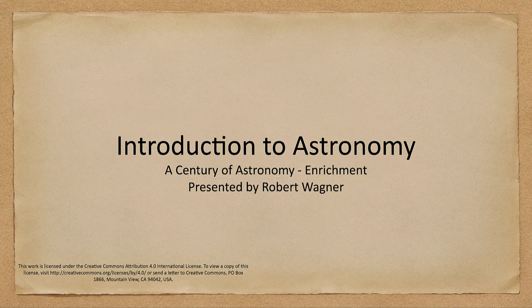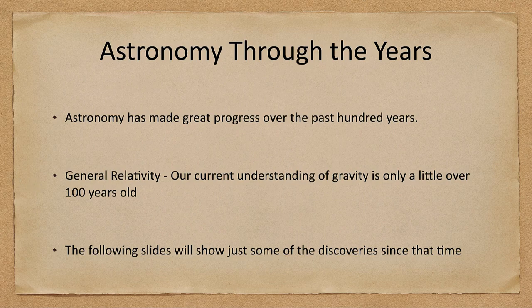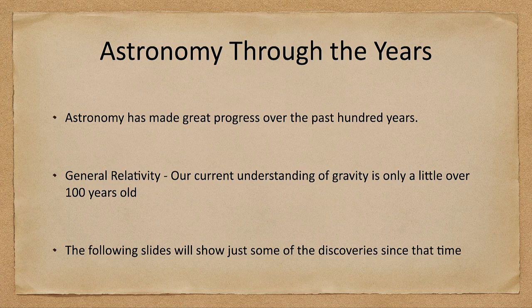Let's go ahead and get started talking about how astronomy has changed. We have learned so much more about stars and galaxies and planets over the past hundred years — so many things that we know today that we had no idea about just a hundred years ago. General relativity is an example; it's only a little over a hundred years old when it was first published, and that is our current understanding of gravity.